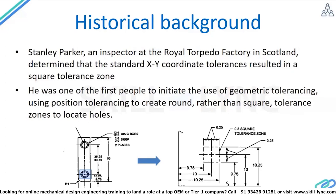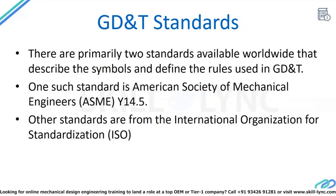To achieve the design intent of all these geometries, there were numerous methods across the world, and a time came when the engineering world started to standardize all those geometric dimensioning and tolerancing methods. Even now there are many standards available across different industries, but the two primary standards used worldwide are ASME and ISO. ASME stands for American Society of Mechanical Engineers, and ISO stands for International Organization for Standardization.